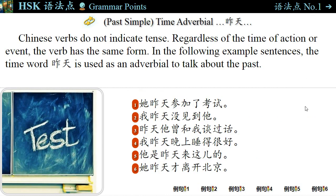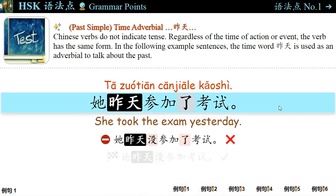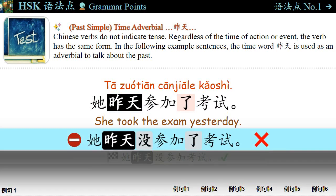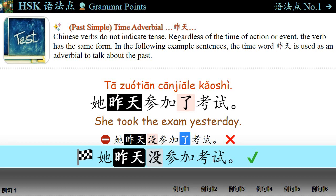语法点一: In the following example sentences, the time word 昨天 is used as an adverbial to talk about the past. 例句一: 她昨天参加了考试。 She took the exam yesterday. The tense of this sentence is past simple. Note: 她昨天没参加了考试 is wrong. The correct form is 她昨天没参加考试。 The aspect particle 了 cannot be used with 没。